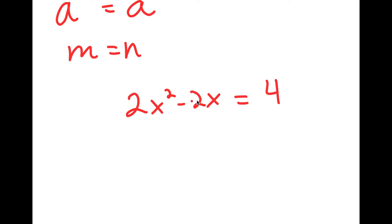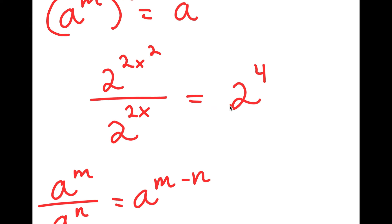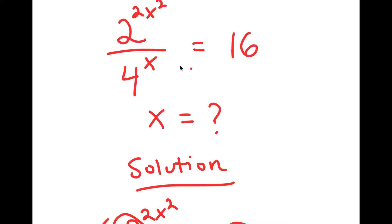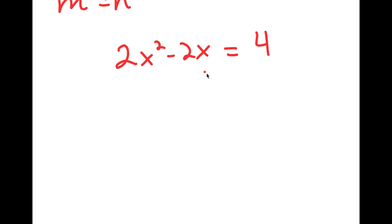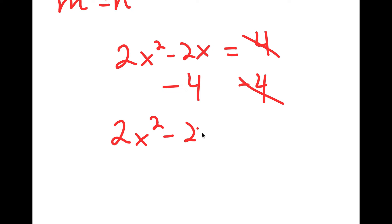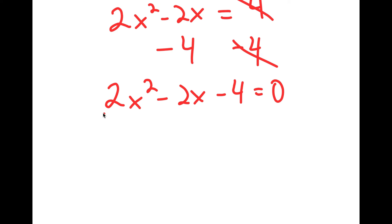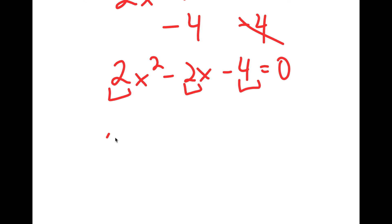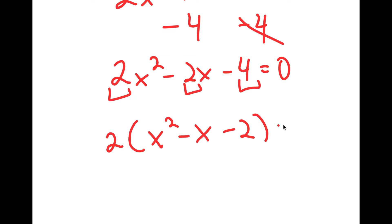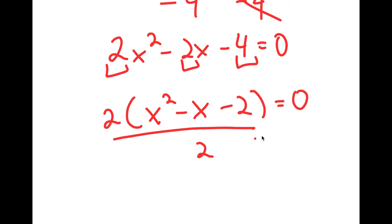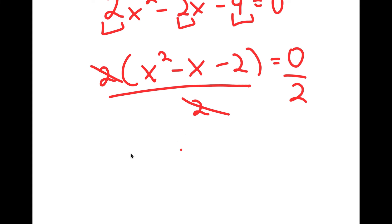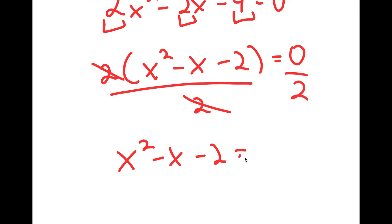Now we have a much simpler equation compared to what we had at the start. From here, I'm going to subtract 4 on both sides so I can make this a quadratic equation. So now I have 2x squared minus 2x minus 4 is equal to 0. I have a common factor of 2, so I factor out 2 and get 2 times (x squared minus x minus 2) equals 0. Dividing both sides by 2, I get x squared minus x minus 2 is equal to 0.